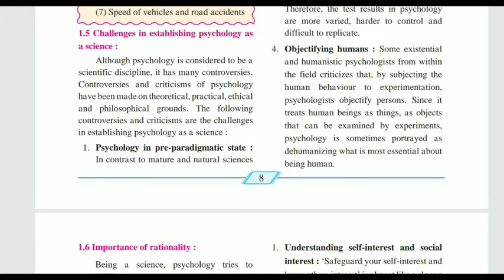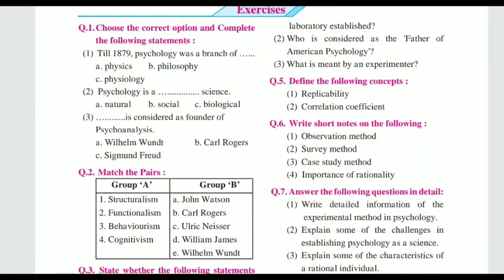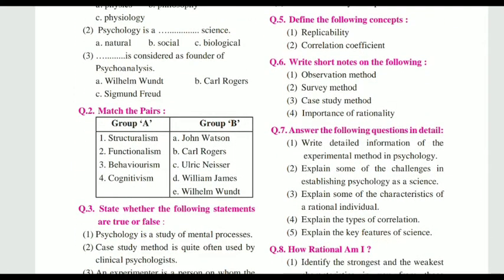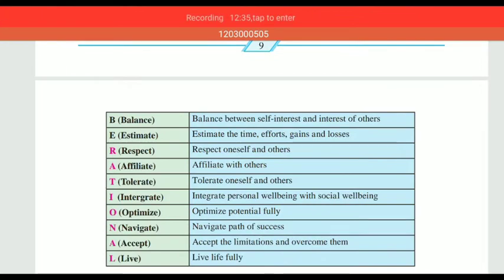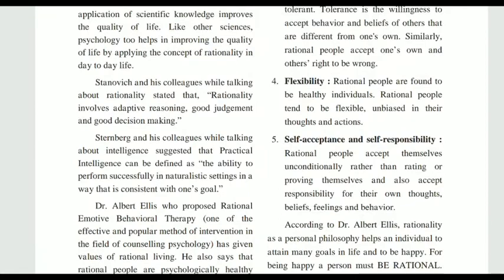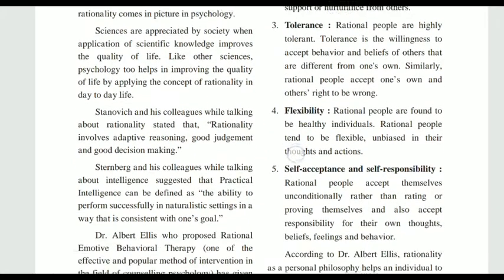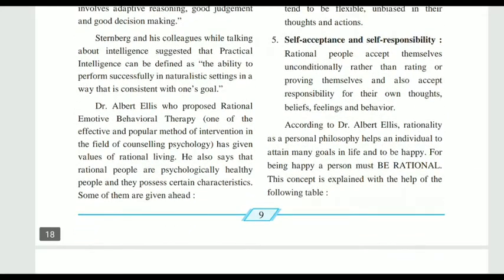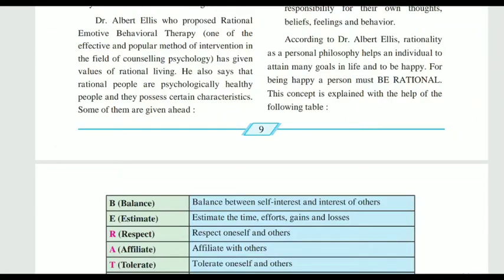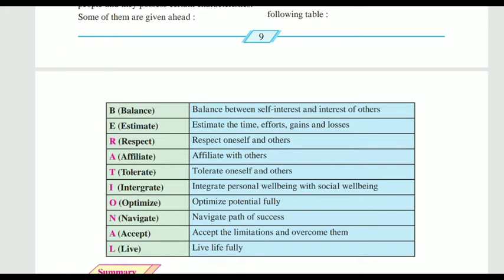Next, question 7.3: explain some of the characteristics of a rational individual. This question will be similar to the importance of rationality. You can start from the definition given by Sternwish, then the definition given by Sternberg, then write the five points of rationality, then how Albert Ellis explained rationality, and write the entire box. That particular answer would then look like a 10-marks answer.